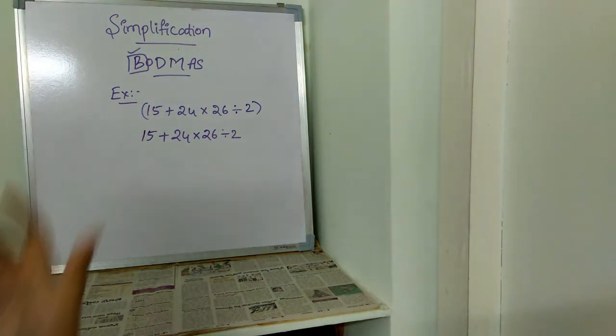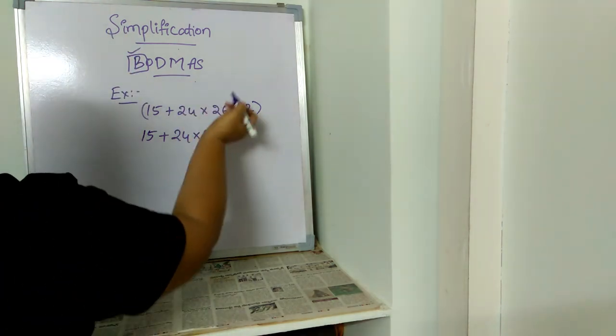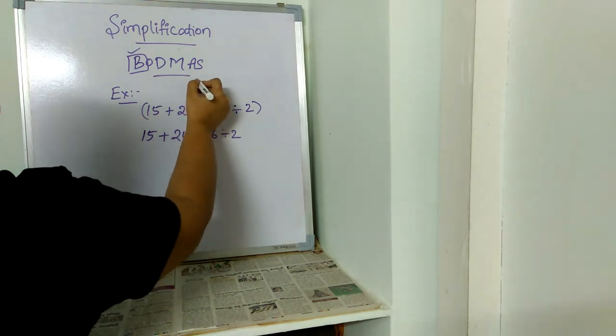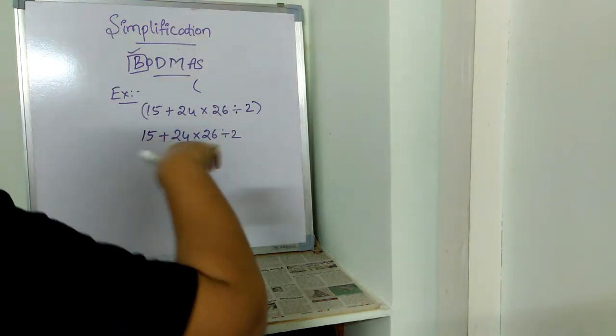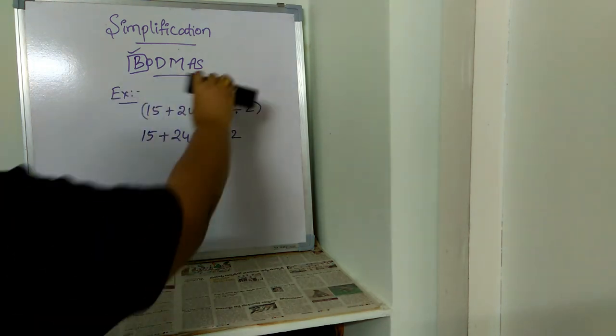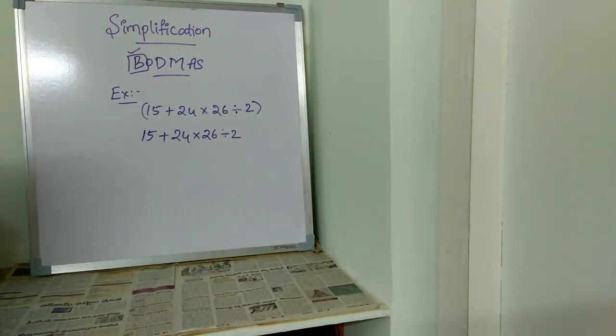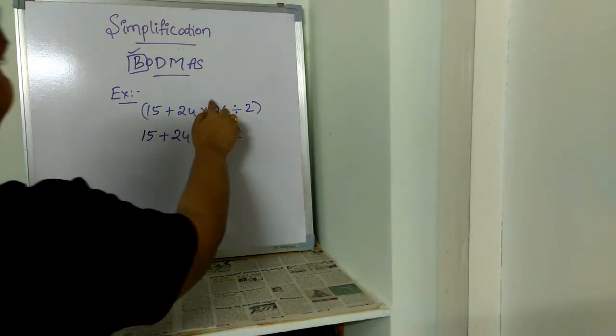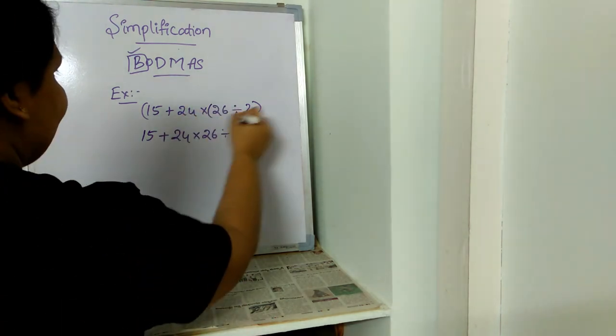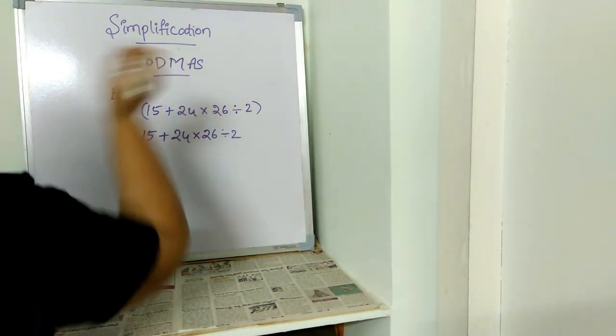After braces, the next symbol is of. Of is also nothing but braces only. For example, if a number has another set of braces, it is called of. Here we have only one bracket, one set of brackets, so there is no O, there is no of.